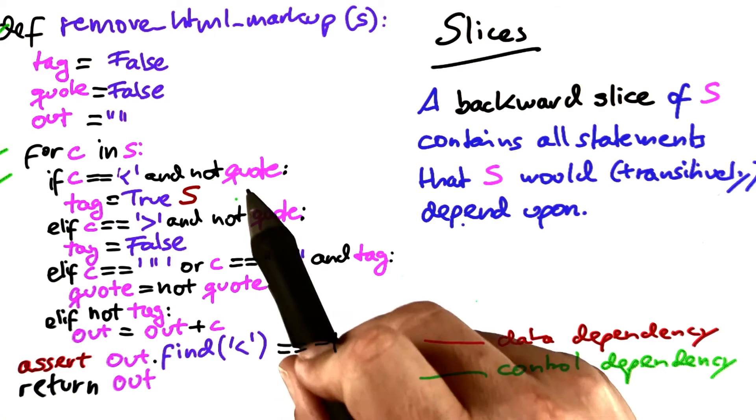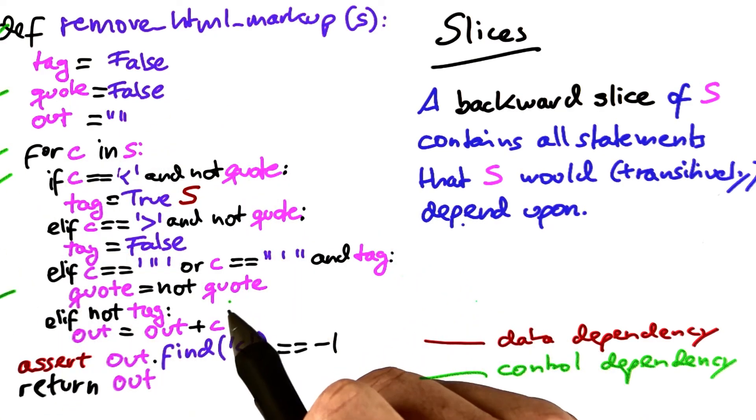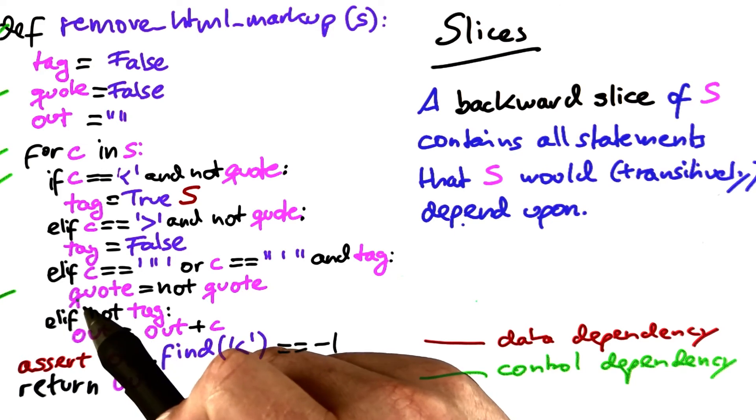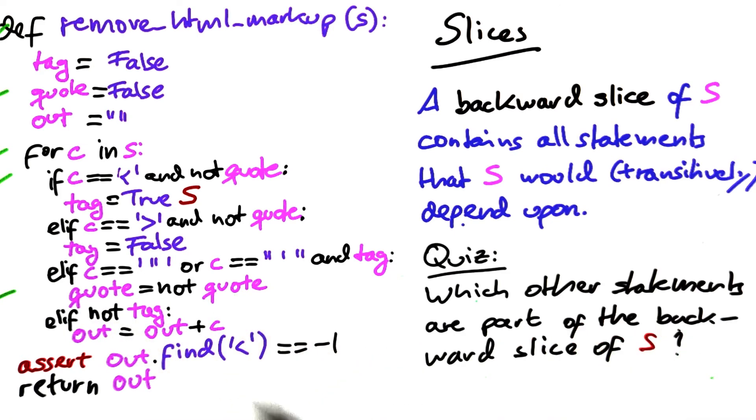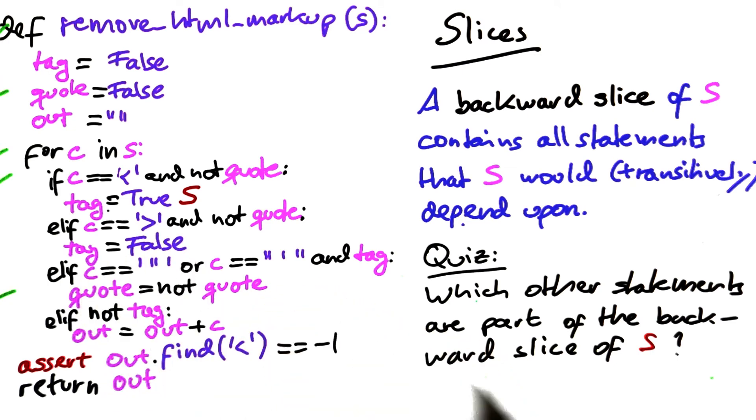Now let's go to quote. Where does quote come from? It is being initialized up here and set down here. So we end up in the place where quote is being set. Now, can you keep on doing this, completing the backward slice of s?